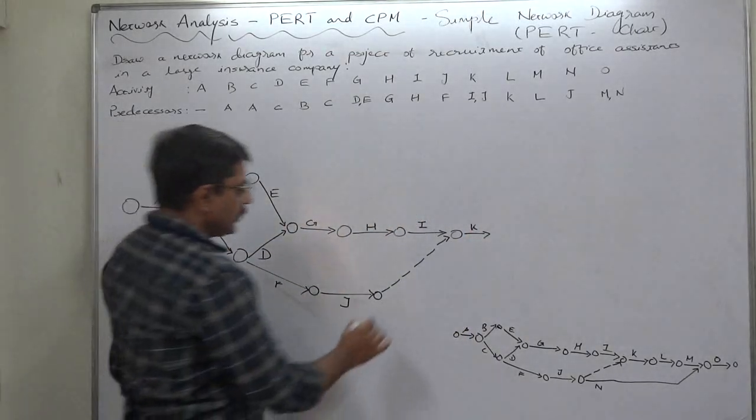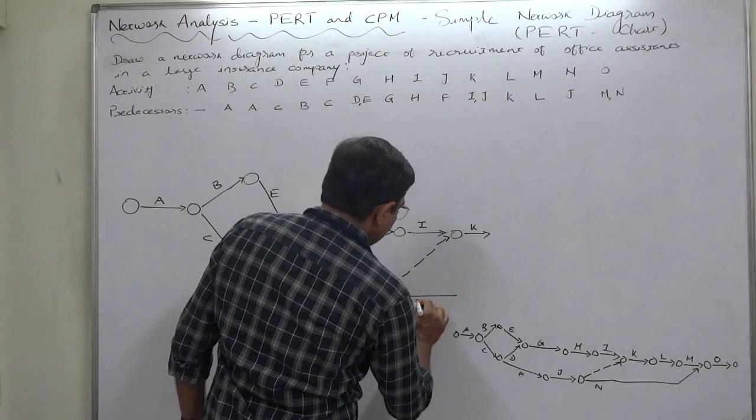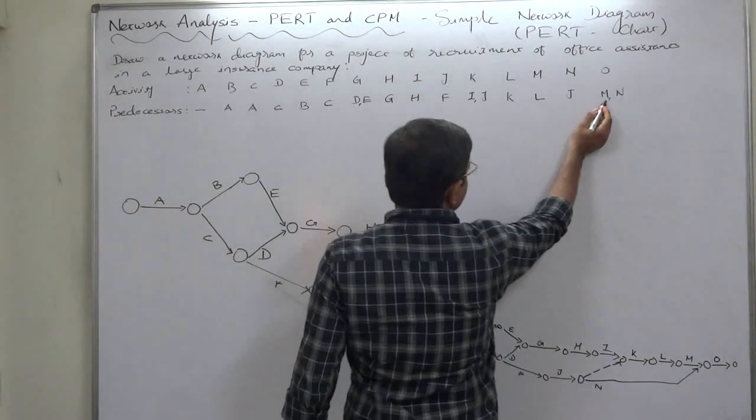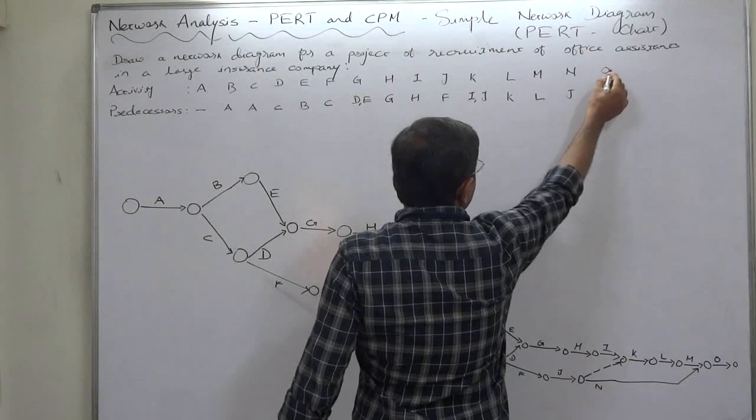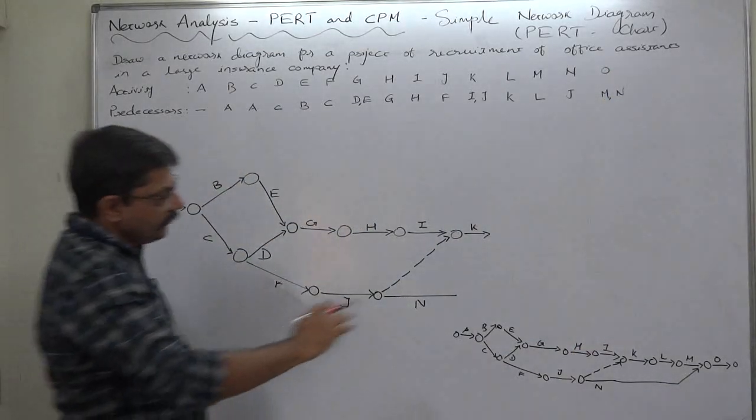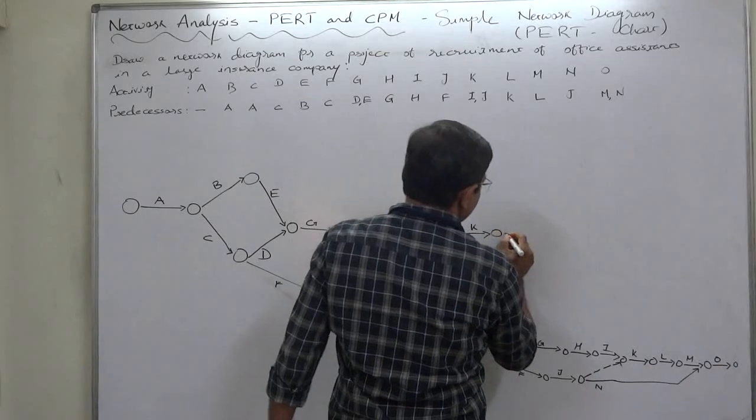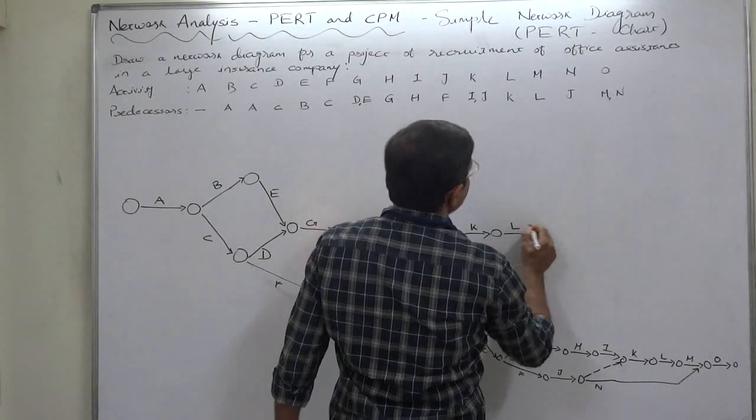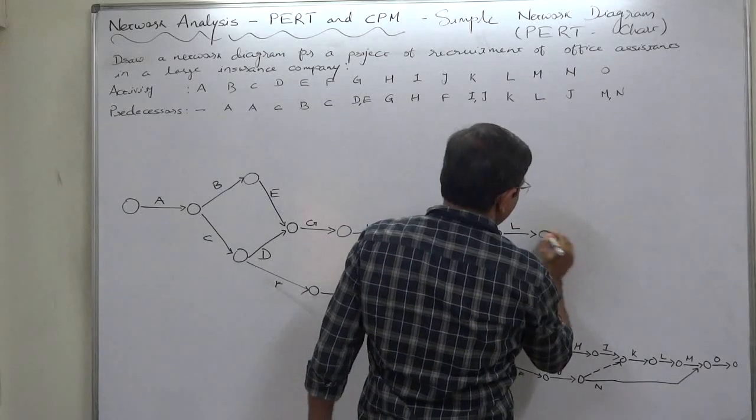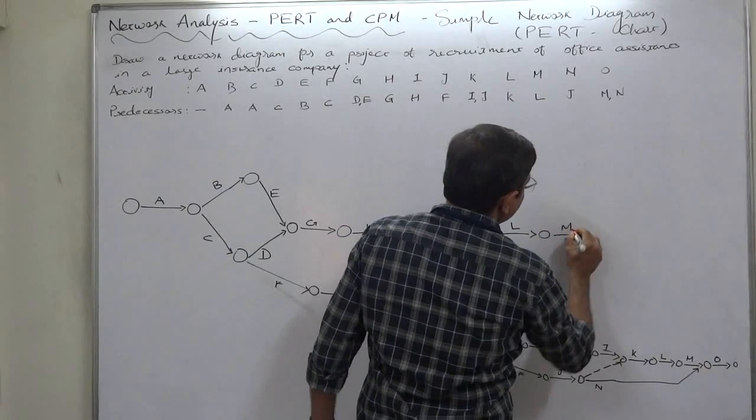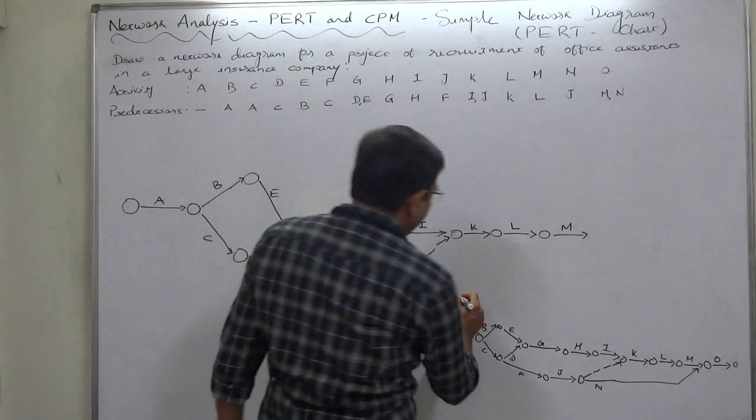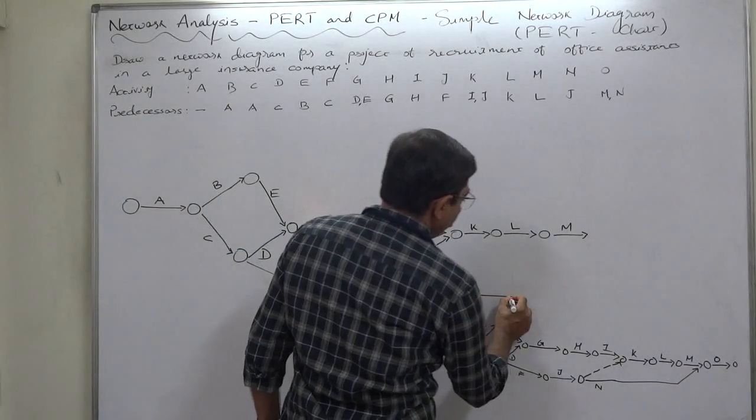Here it will be N, but N becomes the predecessor together with M for the last activity O only. So first we have to go for other activities. K becomes predecessor of L. L becomes predecessor of M. And M and N both become predecessors of O, and O is the last activity.